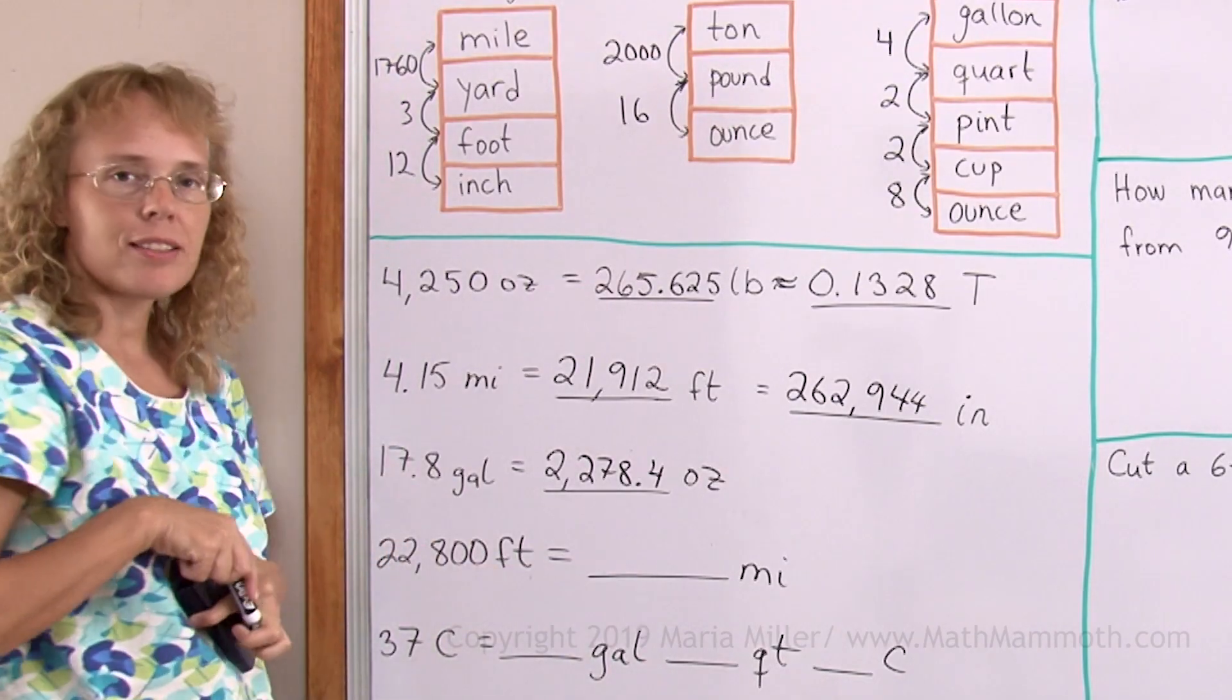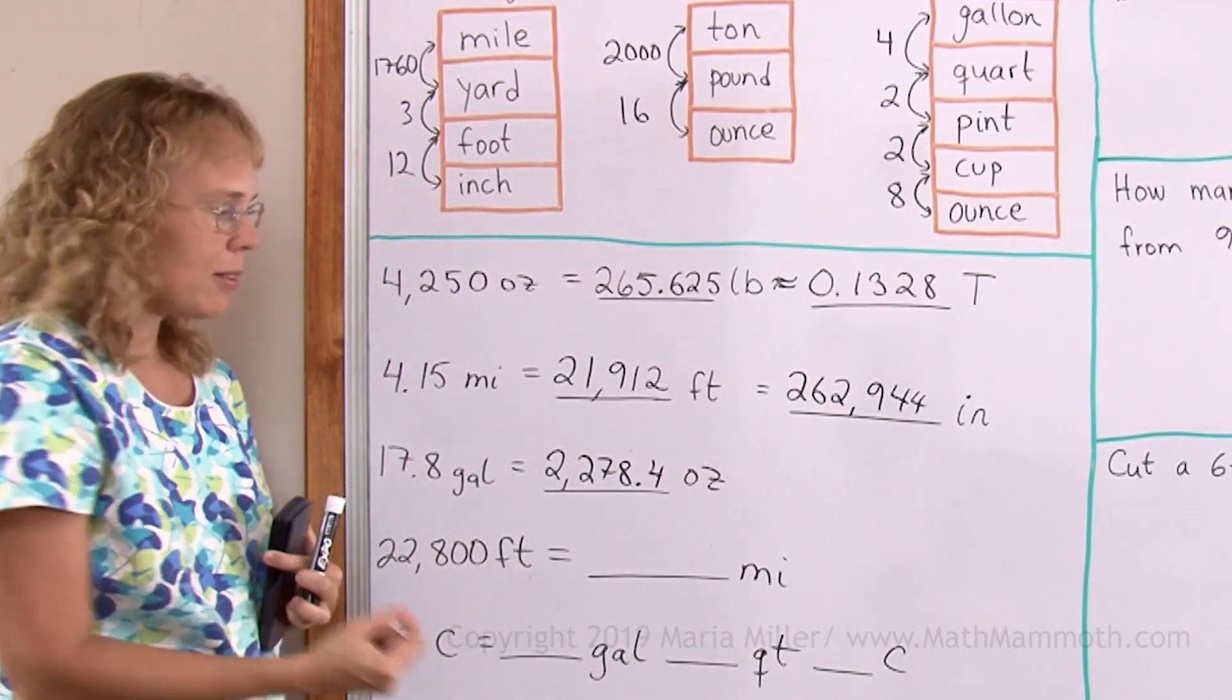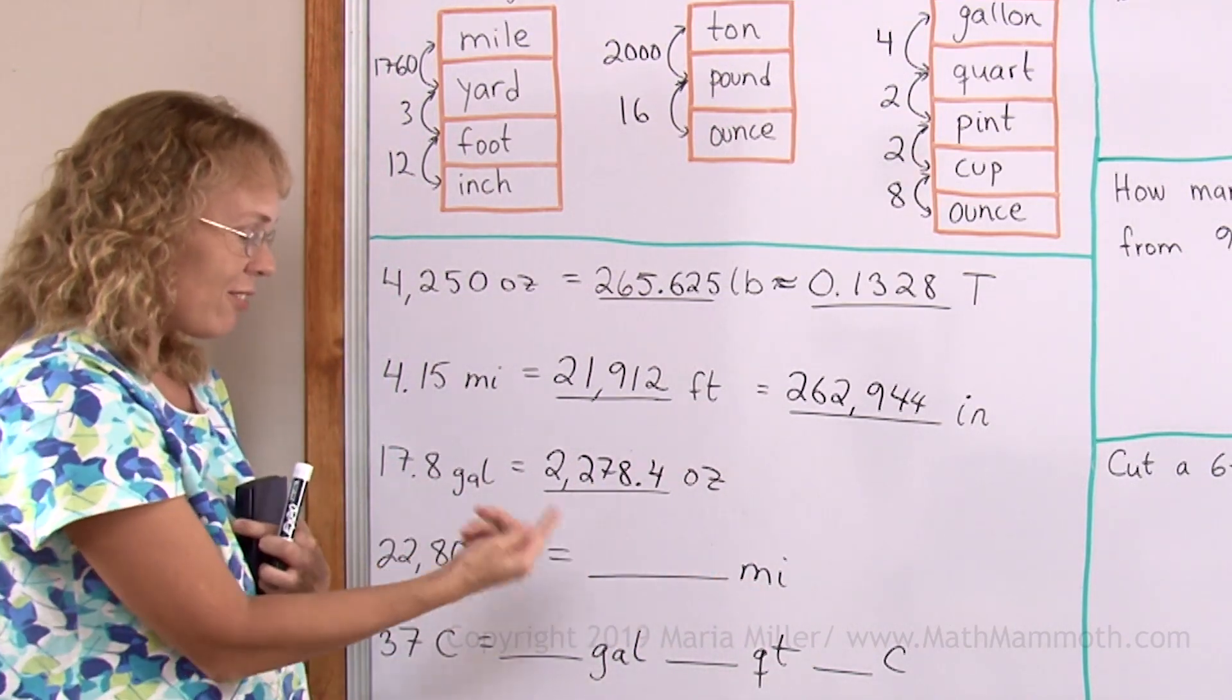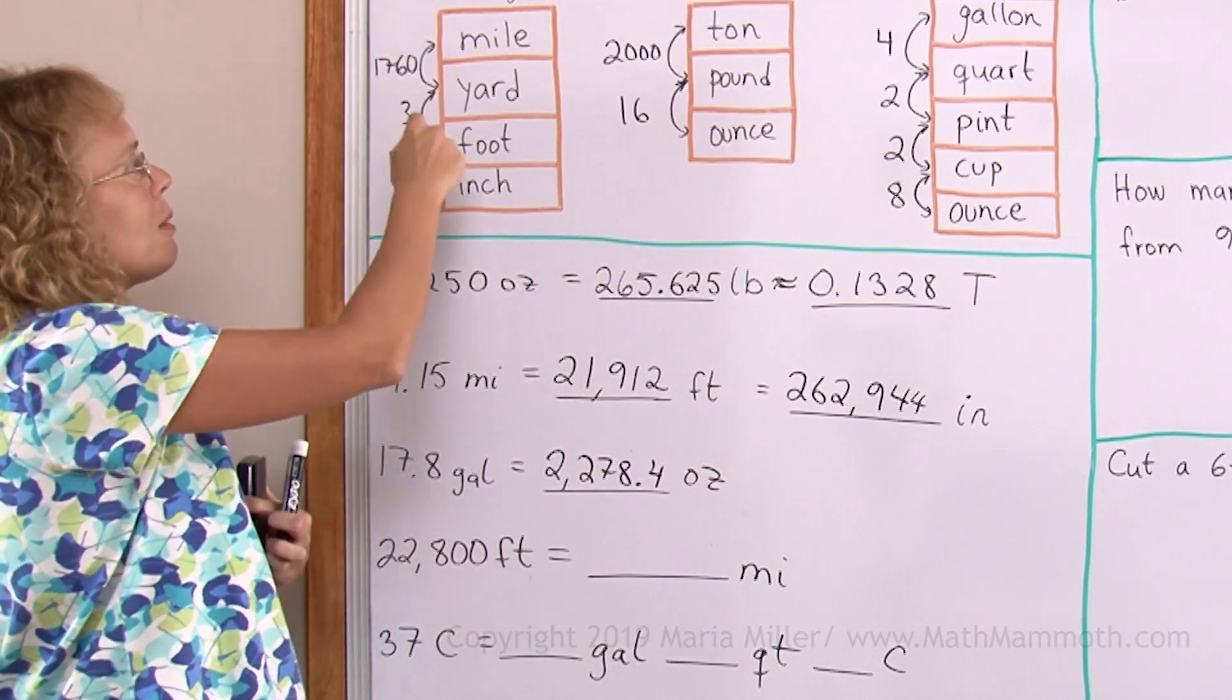Now from feet to miles. Feet are smaller units. Miles are big units. We need fewer of them. So from here to here we will divide feet and miles. Again, it is the 5280 factor.